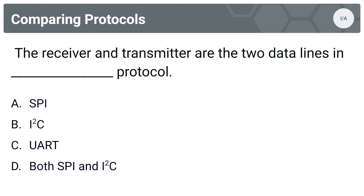Next question, another fill-in-the-blank: receiver and transmitter are the two data lines in which protocol? Options are A, SPI; B, I2C; C, UART; or D, both SPI and I2C. The answer is C, UART. If it were another protocol, it would need a clock line. If it were SPI, it would have more than two lines. That really only leaves UART.